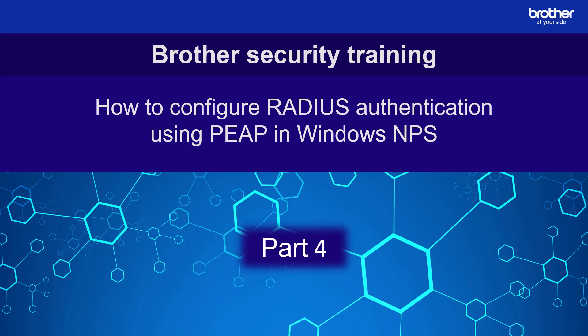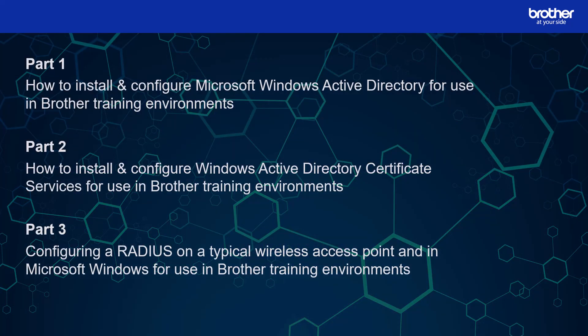Hello and welcome to part 4 of my mini-series of how-to security videos, where I'm going to show you how I configured RADIUS Authentication using PEEP from Windows Server for use in Brother training environments. Please note that it is a continuation from parts 1, 2, and 3, so unless you are watching this as a refresher course, I recommend you watch them first. Links to them can be found in the description.